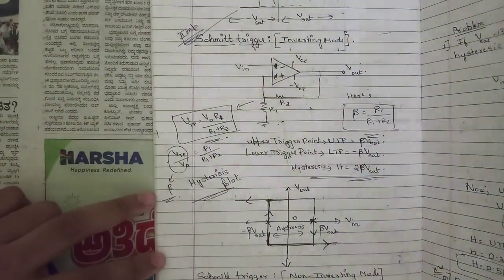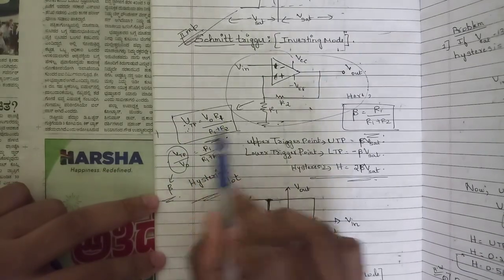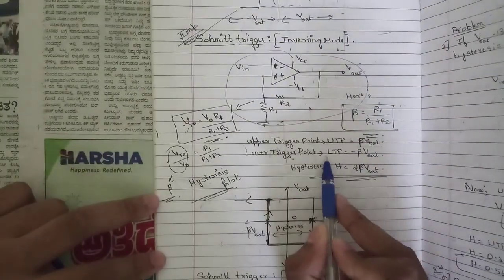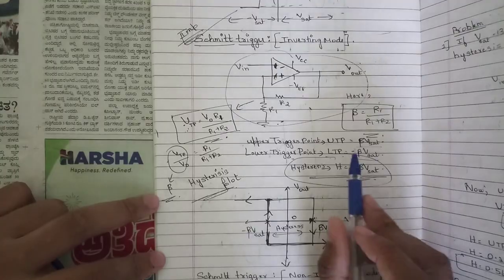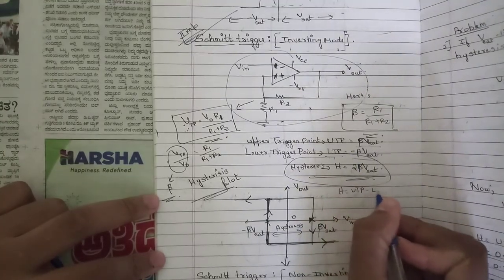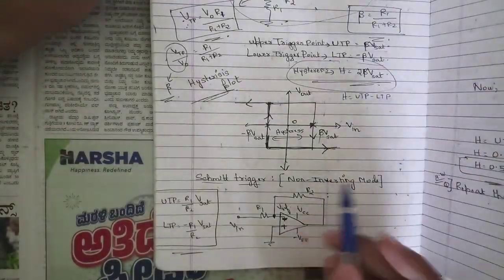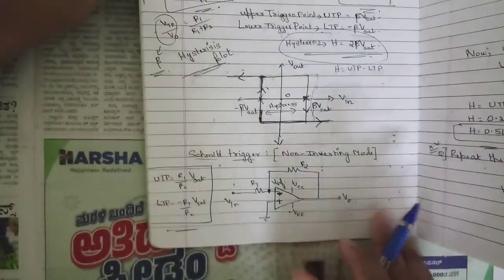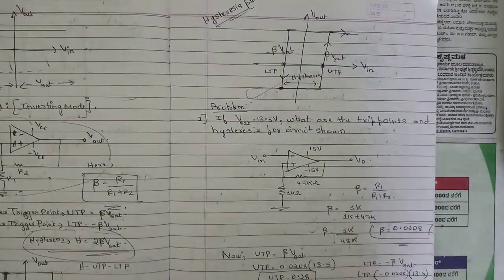One question on Schmitt trigger will definitely be asked. The triggered-point voltage is V0 × R1 / (R1 + R2), where β = R1 / (R1 + R2). The upper trigger point (UTP) = β × V_sat, and the lower trigger point (LTP) = −β × V_sat. Total hysteresis = UTP − LTP = β × V_sat − (−β × V_sat) = 2β × V_sat. Note the hysteresis plot and also the Schmitt trigger for non-inverting mode — the hysteresis direction is completely reversed.